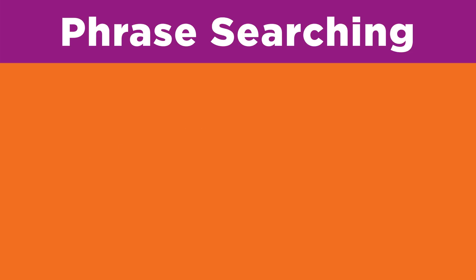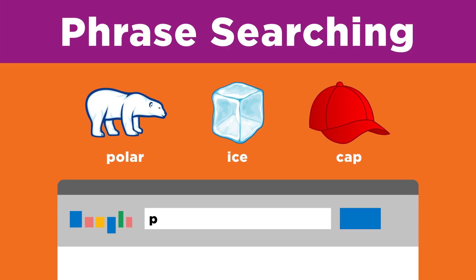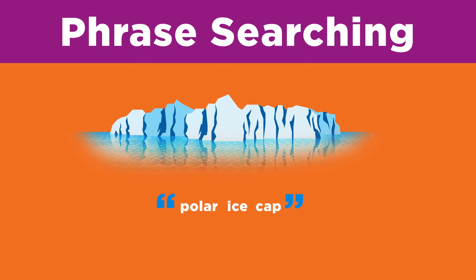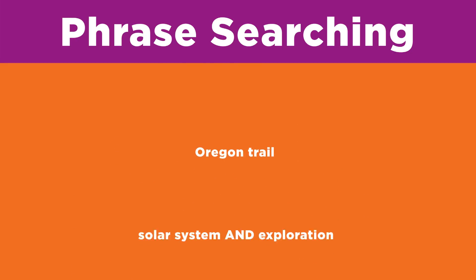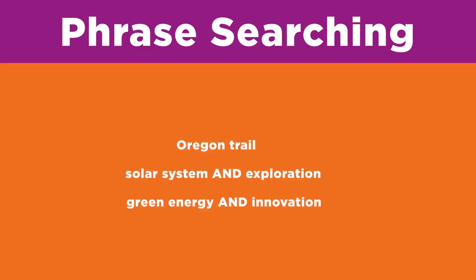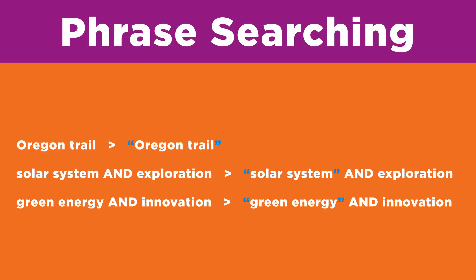For example, let's look at the phrase 'polar ice cap.' In a search using three individual words, many of your results would be irrelevant. Instead, if you put quotation marks around the phrase, you're telling the computer to limit results to articles that use these three words in this exact order. To avoid irrelevant results, put the phrase in quotation marks when using it as a keyword.